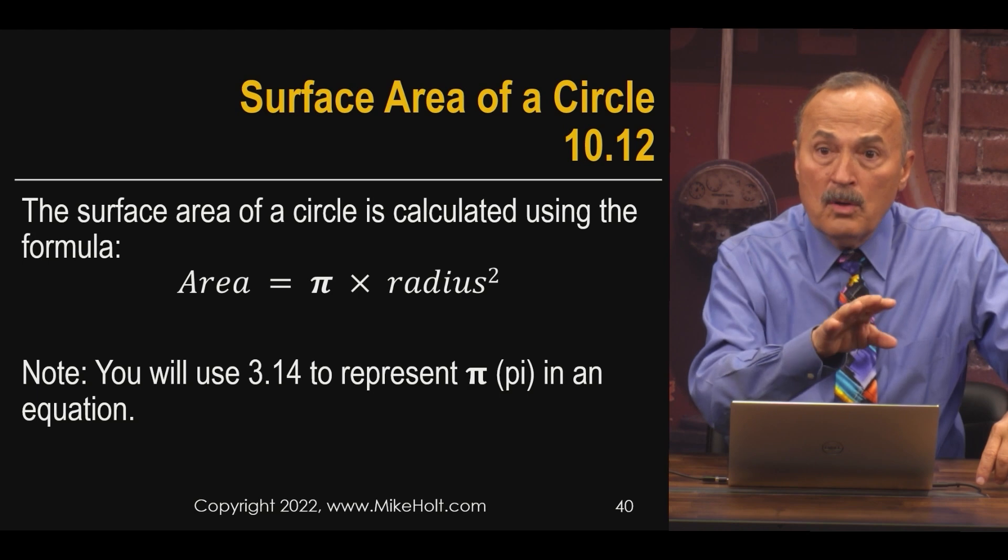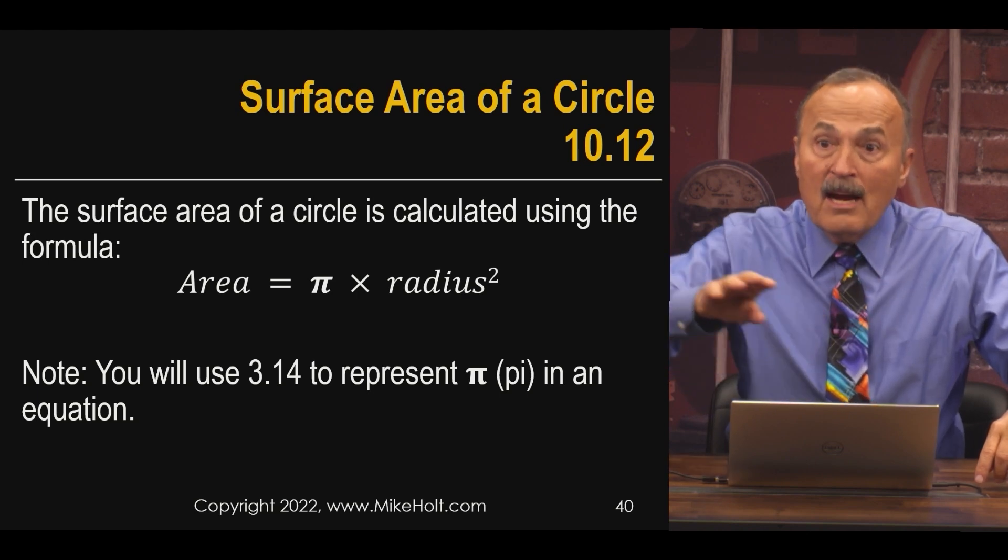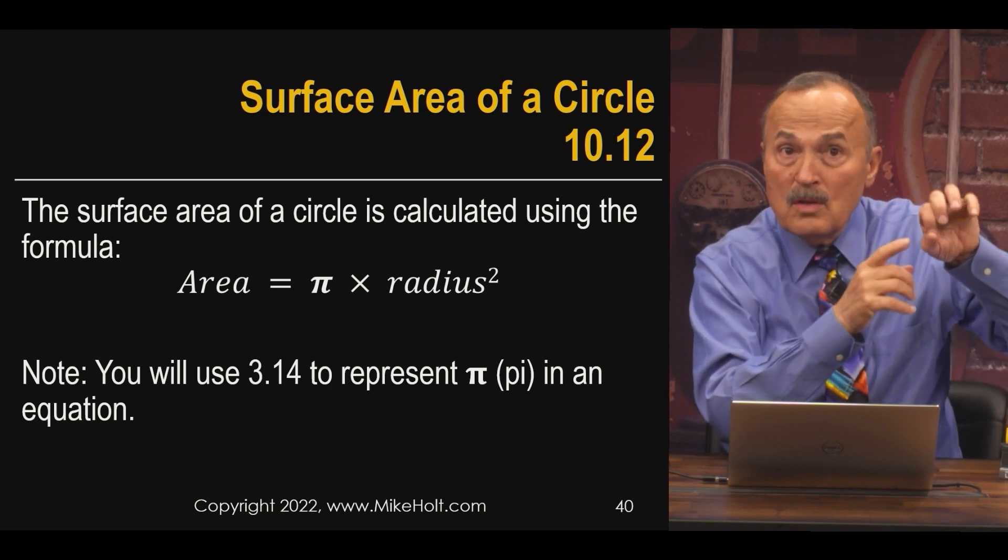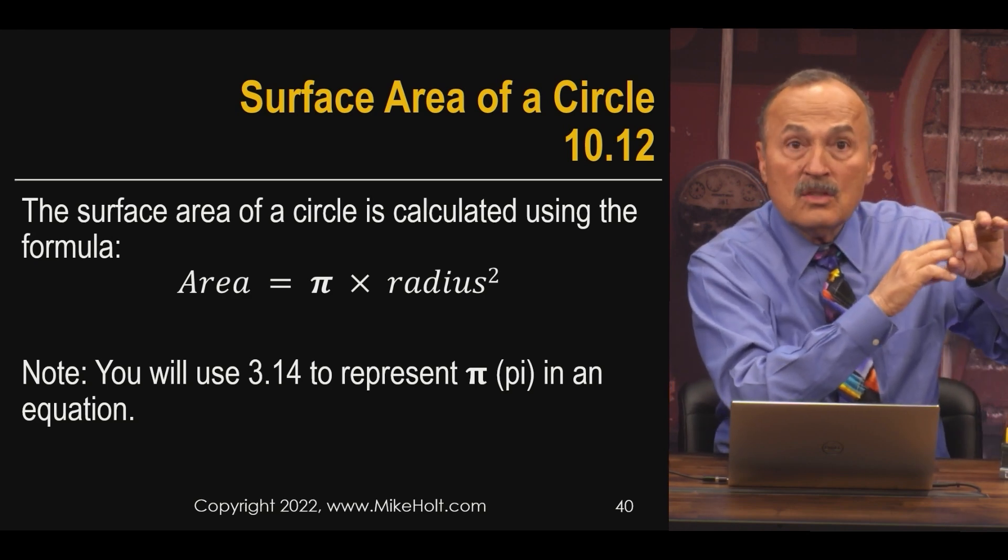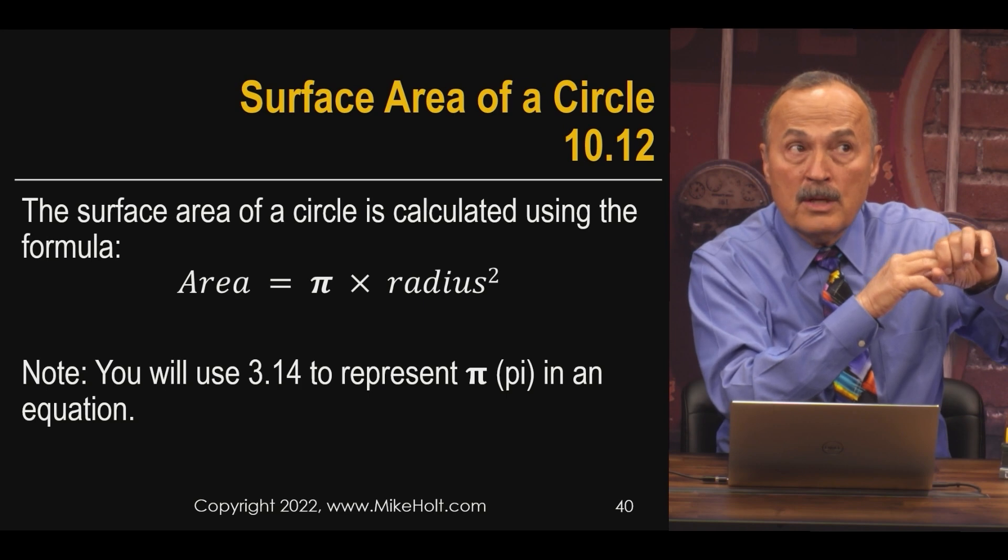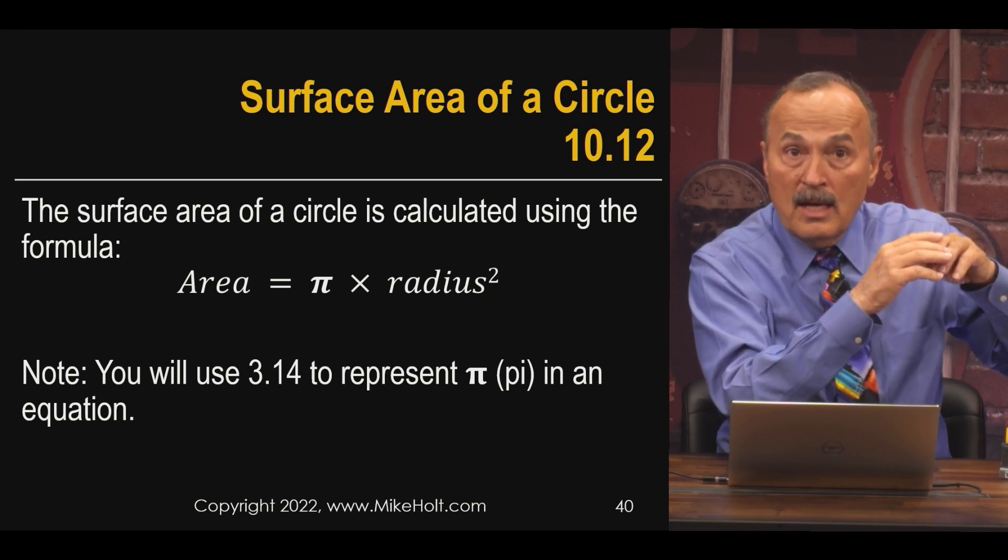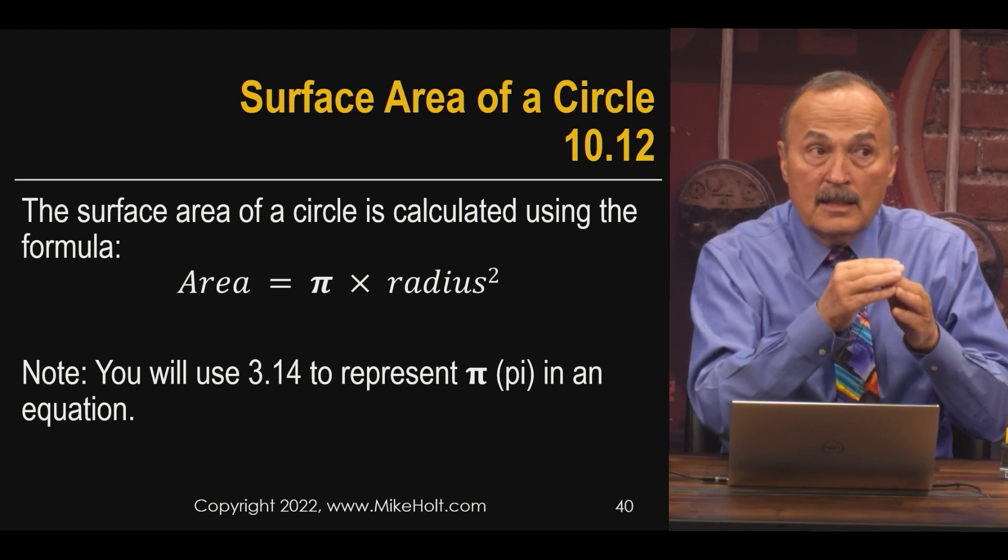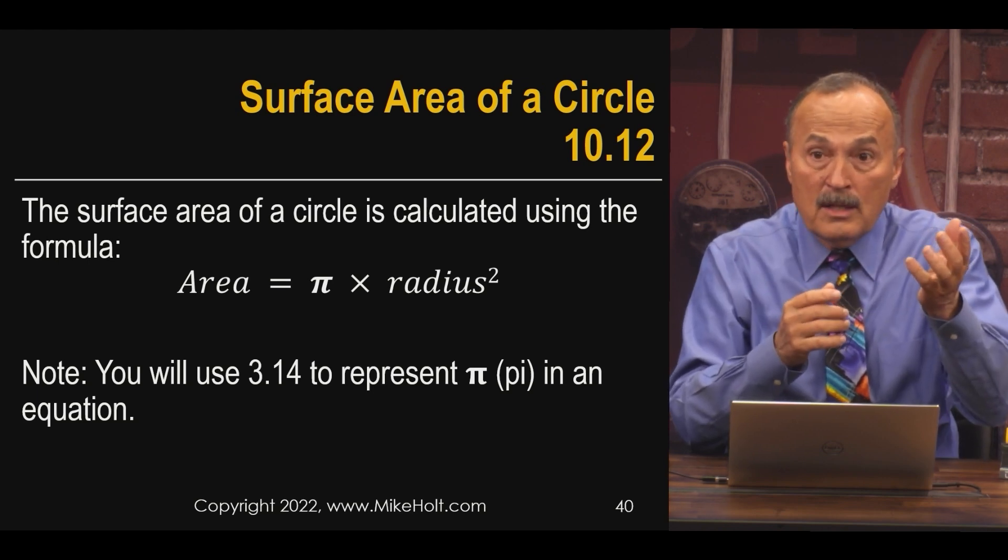The code says, look, if you get wires that are not in this code book, you're going to have to figure out what the area is to do the calculation, because you can only fit so many wires physically inside of a raceway. You need to know the area of the raceway, the allowable fill, and the area of the conductors.